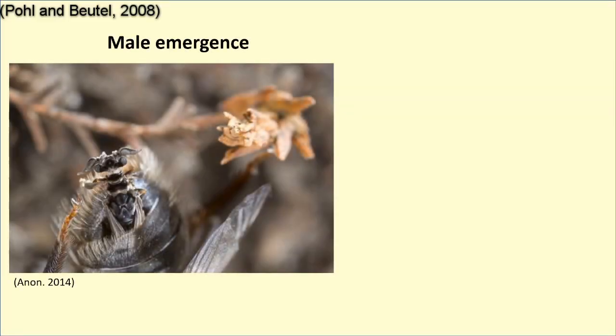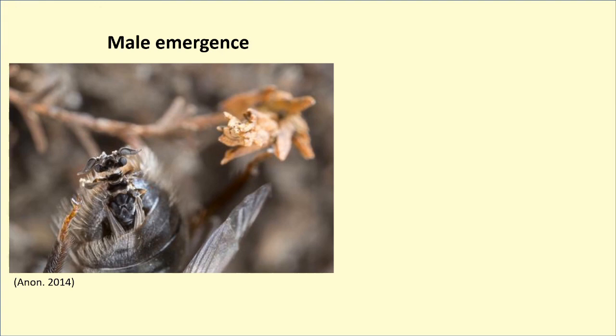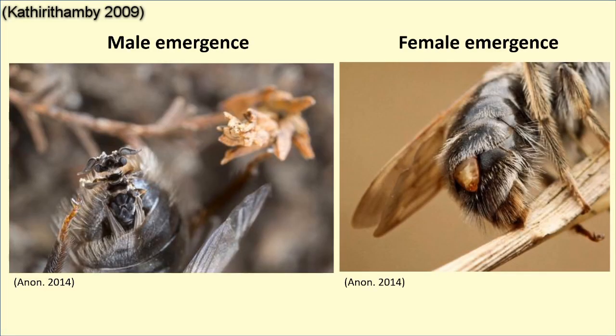The males will emerge from their puparium between the tergites of the host's abdomen, living for only a few hours to find a female for copulation. Whereas the females, when they emerge, will remain within the host, adopting a more neotenic body structure.